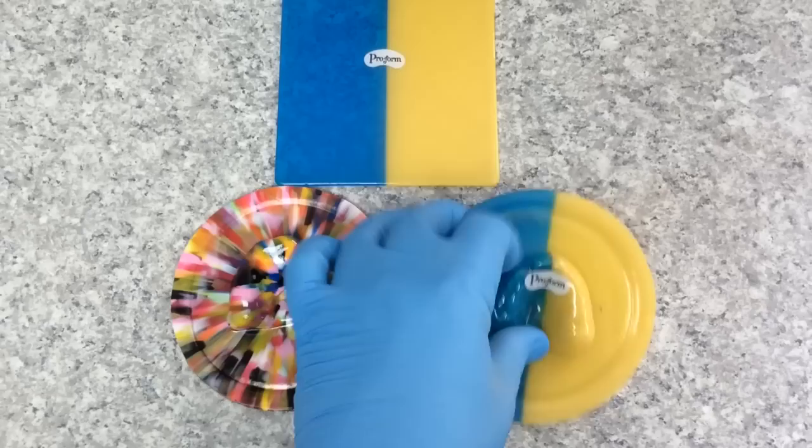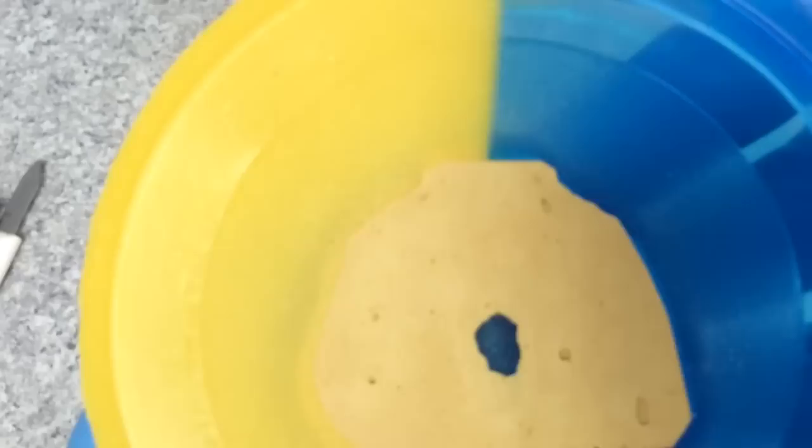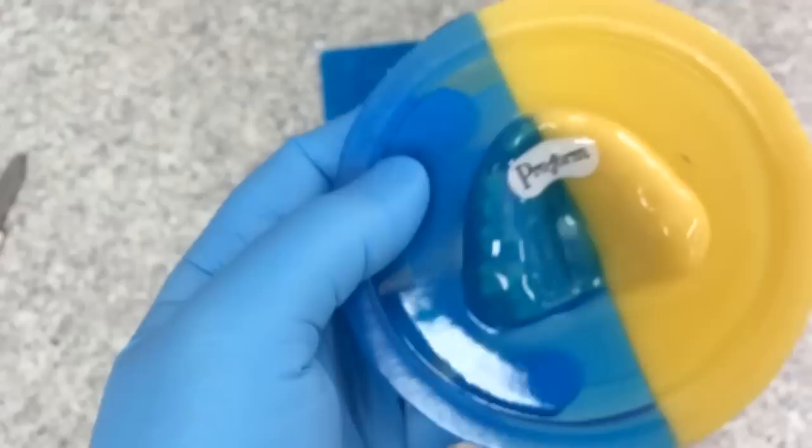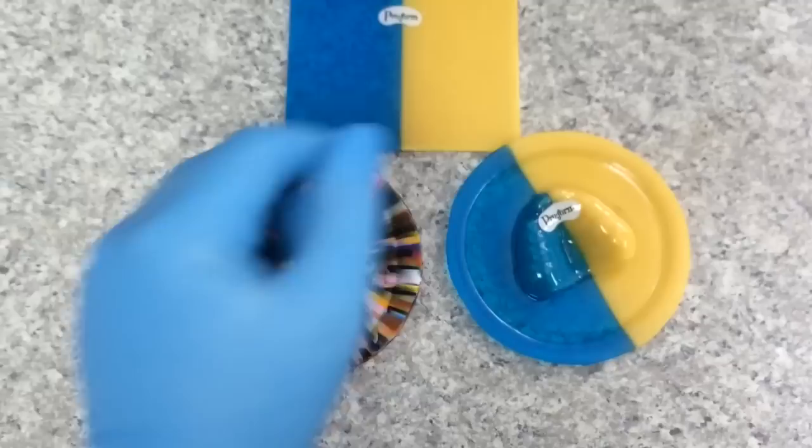If I flip this over, you'd see that it is formed right along the edges of that. There's no gap at all. This is what gives a custom fit mouth guard such a better fit than the boil and bite mouth guards that you'd get from the store.